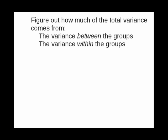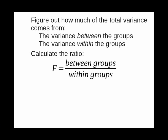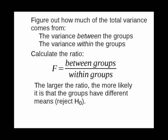So here's the idea behind analysis of variance. Figure out how much of the total variance comes from the between groups variance and the within groups variance. Take the ratio of between groups to within groups variance. And the larger this number is, the more likely it is that the means of the groups really are different, and that you should reject the null hypothesis.